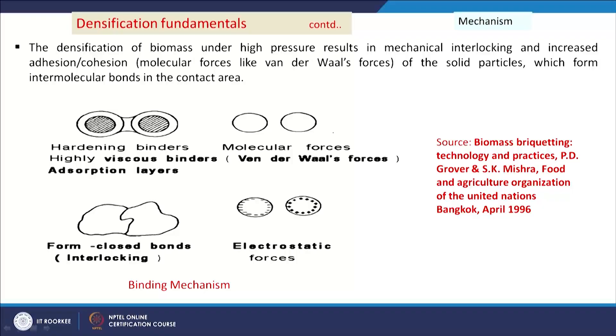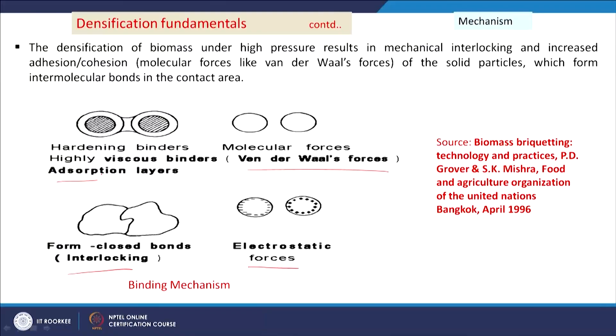The major disadvantage of biomass densification technology is the high cost associated with some densification processes. Regarding the mechanism, Van der Waal forces and electrostatic forces can be responsible for binding or interlocking particles. If additives are added, hardening binders and highly viscous binders form adsorption layers and connect the particles of the biomass and waste, making them strong.